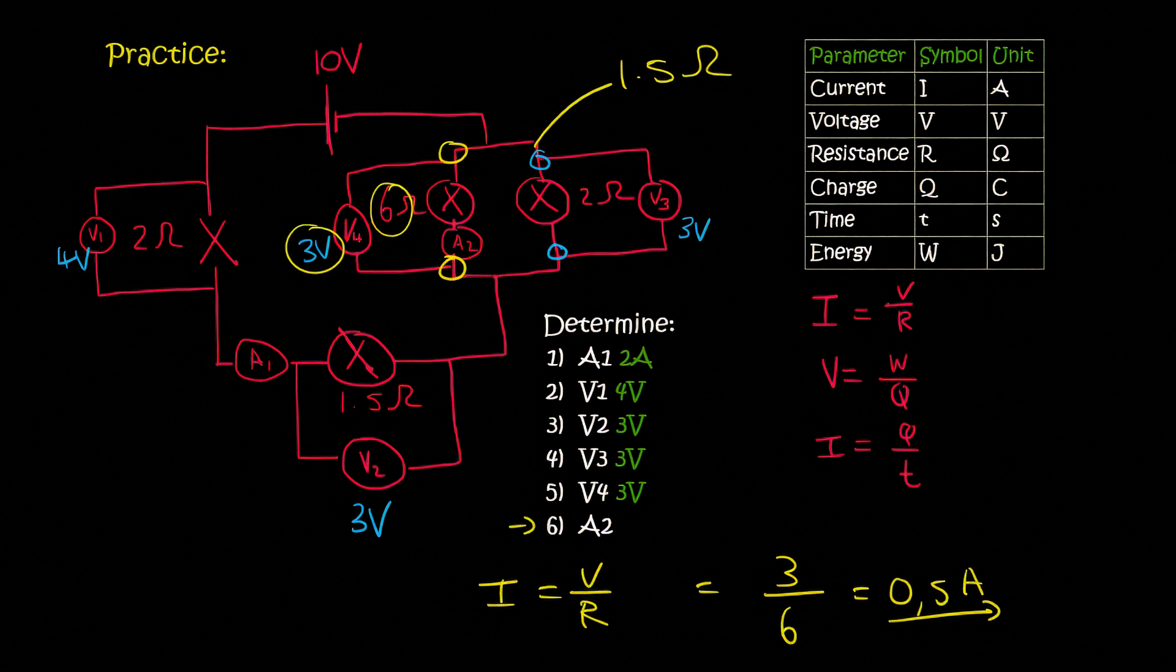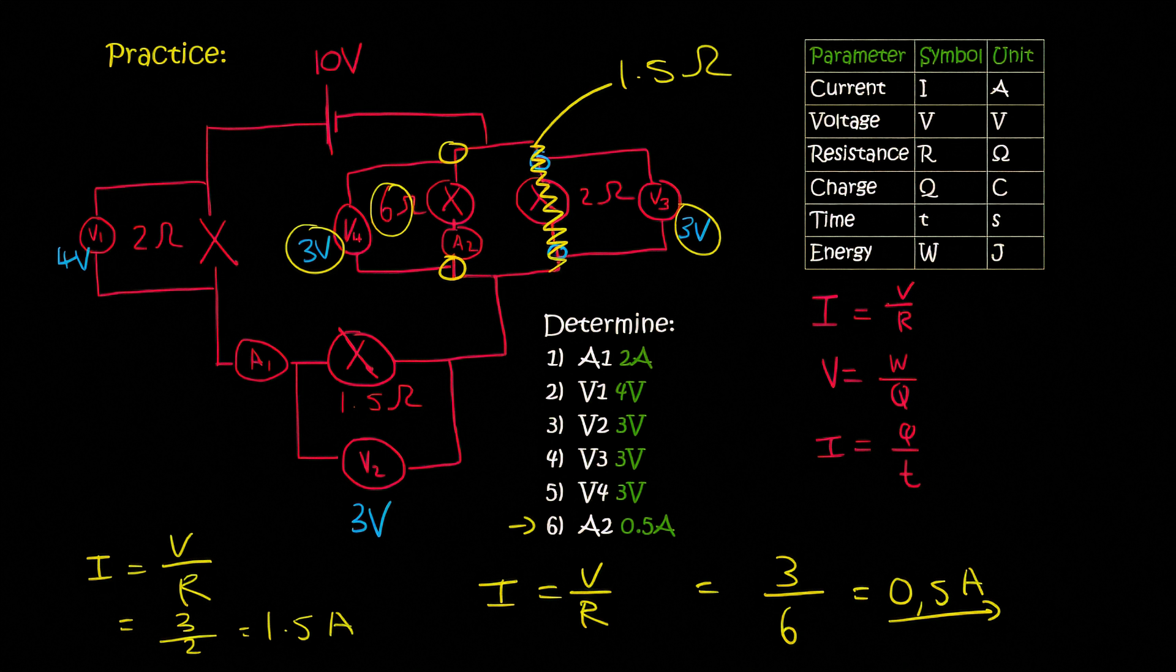Now have a look how interesting this is. If we had to quickly go work out the current going through this branch, then we would have to say I equals to V over R, where the voltage across that branch is 3, and the resistance is 2. And so that would give you 1.5 amps.